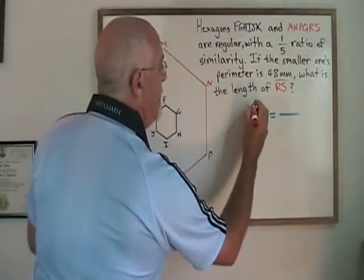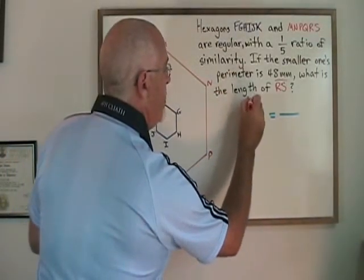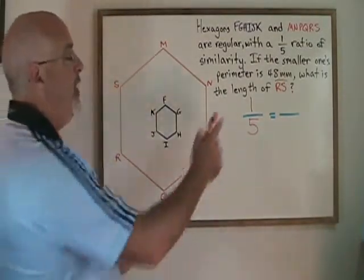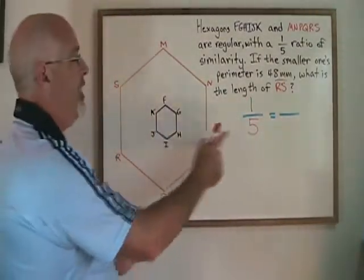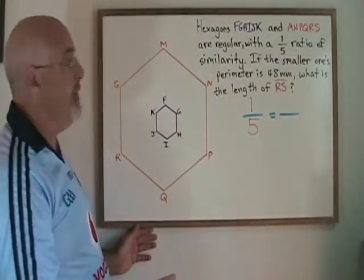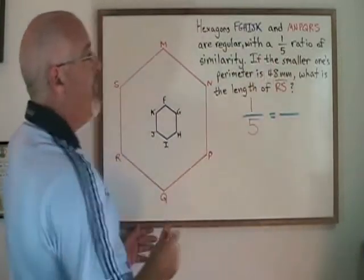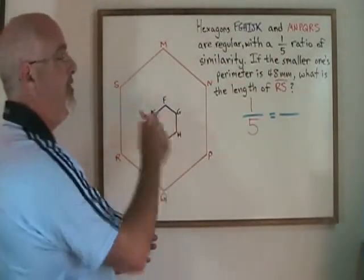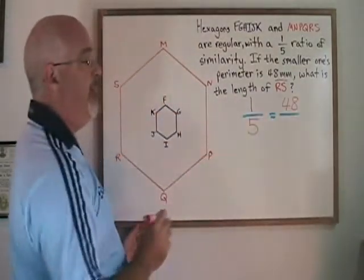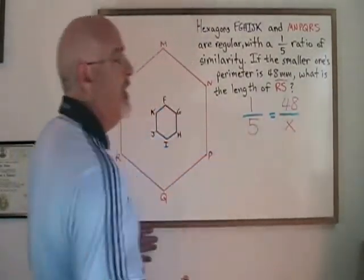The 1 to 5 ratio of similarity can go here in my proportion. The 1 obviously represents the smaller one and the 5 the larger, so we have a smaller over larger proportion. The perimeter of 48 millimeters is the perimeter of the smaller one, so it has to go over here on top with the 1, and then x goes in the only remaining position.